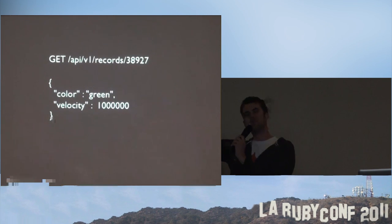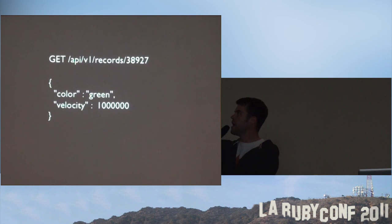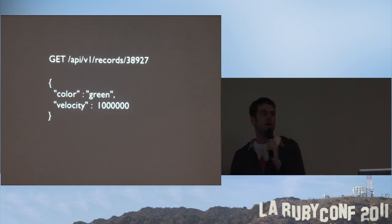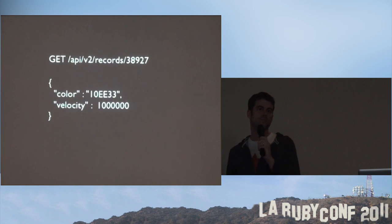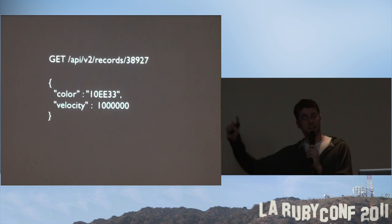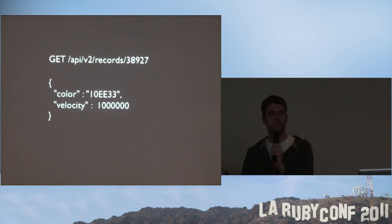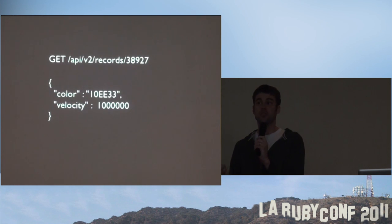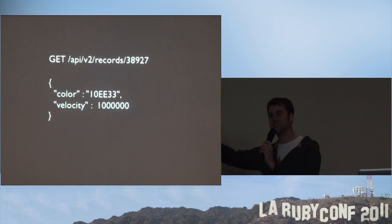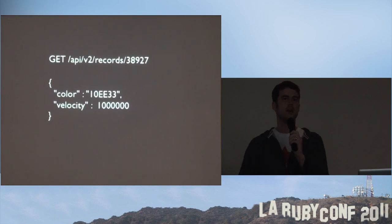So you version your API — for example, API/v1 and then the action returns the string 'green,' and if you request v2, you get the hex value. A side note: you shouldn't version too often. Whatever possible, try to avoid breaking anything — backward compatibility — because it's a pain to manage multiple versions both for the users and for yourself.